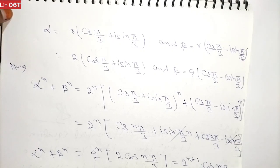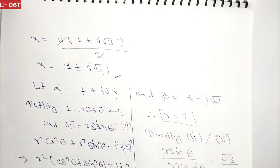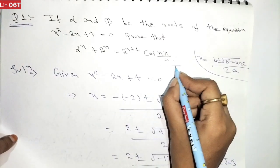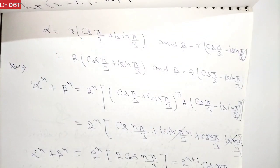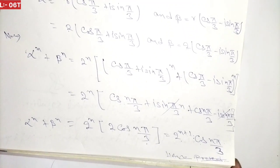So alpha^n plus beta^n equals 2^n times 2 cos(nπ/3), which equals 2^(n+1) cos(nπ/3). This is exactly what we had to prove, so hence proved.